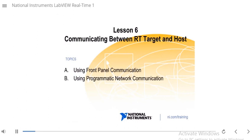In the previous section, we shared latest or buffered data between non-deterministic loops using various methods. By the end of this module, you will be able to use front panel communications to debug VIs and quickly monitor RT VIs during development. In lesson six, we'll talk about different methods you can use to communicate between your RT target and your host computer. The first thing we'll discuss is the use case for front panel communication, then dive into different methods for programmatic network communication.